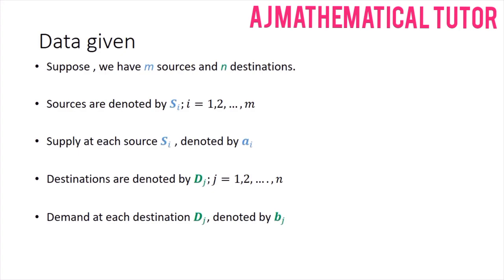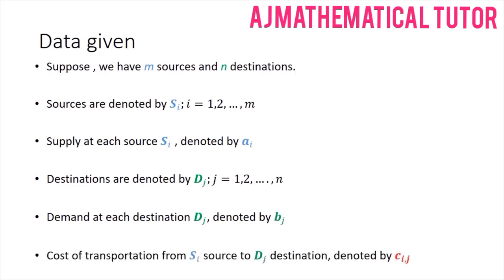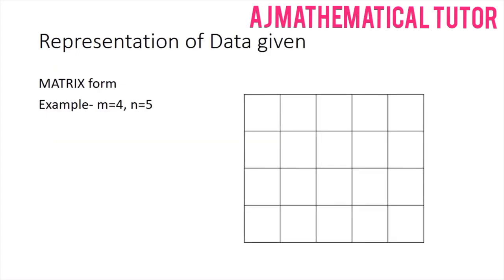To transport goods from source to destination there is a cost of transportation involved. The notation used is cij, giving us m×n costs in total. This data is represented in a specific tabular form, which is the most appropriate form for transportation problems. A simple example uses m = 4 and n = 5.